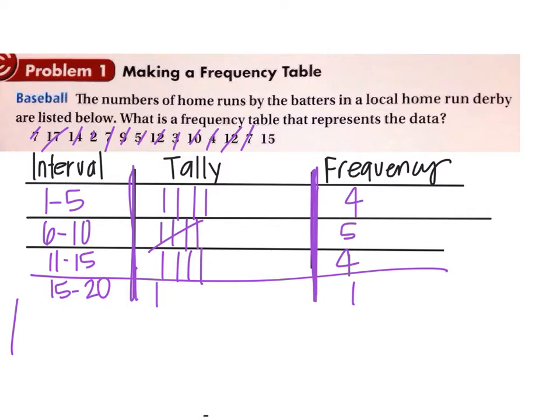And the other thing you can do here is make a histogram. That's kind of like a bar graph, and you have an x-axis and a y-axis. On the x-axis you put the intervals, and then on the y-axis you're going to put the numbers that you got for the intervals. This should be 16 to 20, not 15.